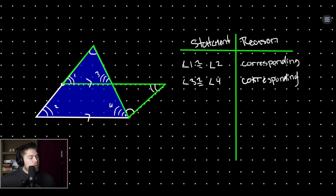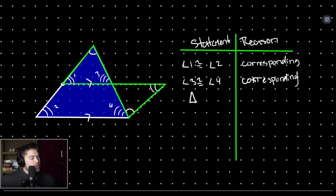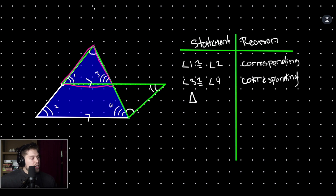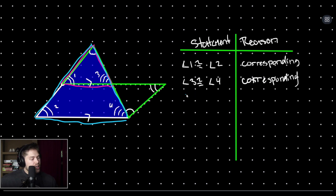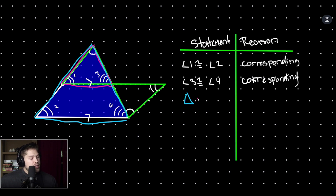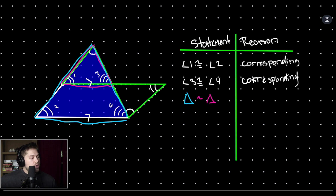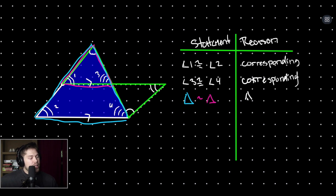Because all of these angles are equivalent, we can say that our top small triangle — let's outline it in pink — is similar to the full large triangle. So our big blue triangle is similar to our small pink triangle by angle-angle-angle similarity.